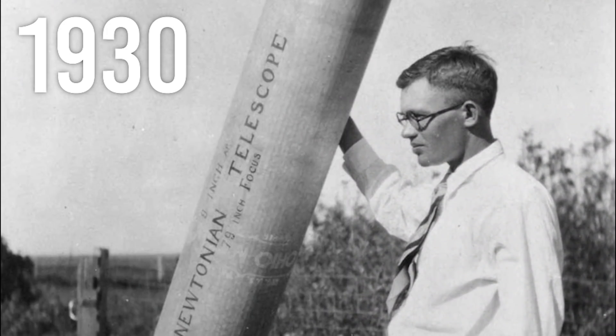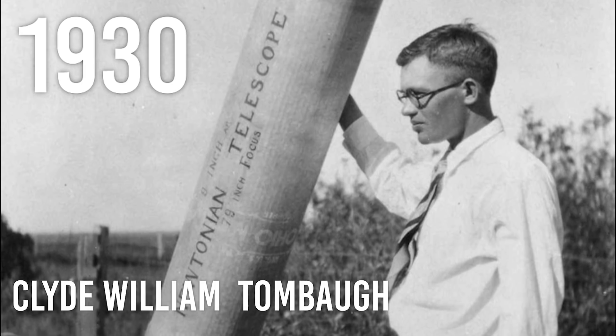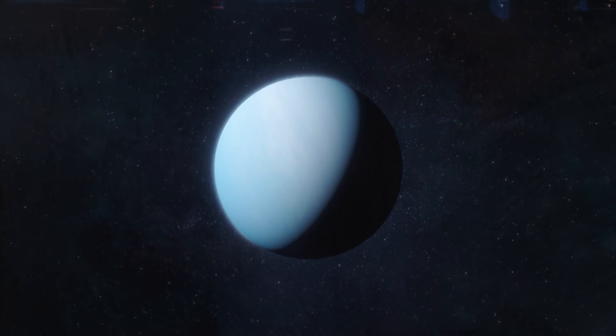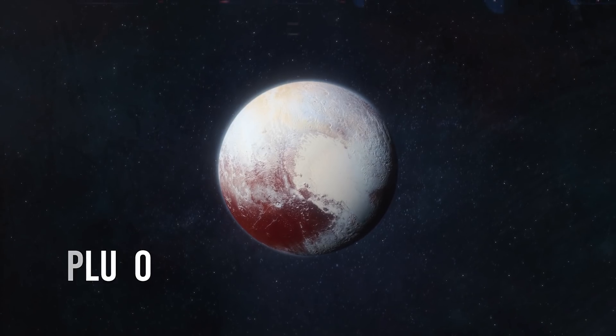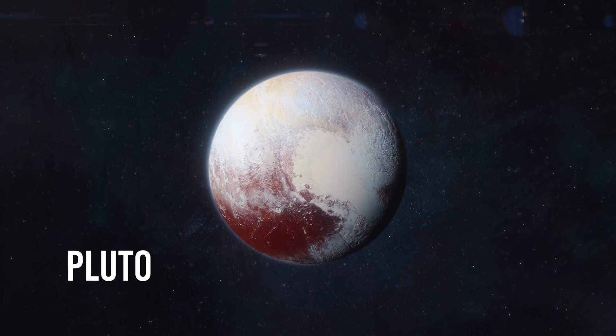Years later, in 1930, the astronomer Clyde William Tombaugh, one of the adepts to the idea of Planet X and faithful follower of Percival Lowell, would manage to demonstrate the existence of a ninth planet beyond the orbit of Neptune. This would be Pluto. For 70 years, Pluto was named as the ninth planet that had been so much sought.